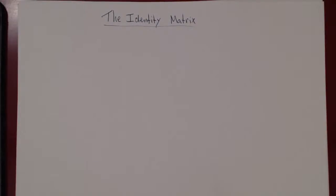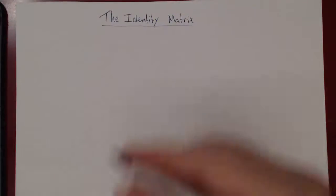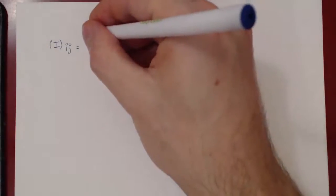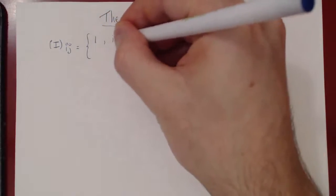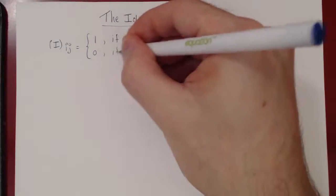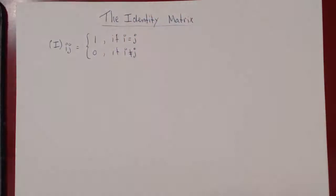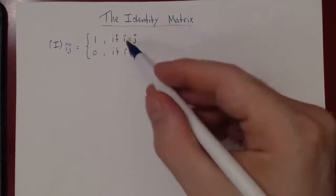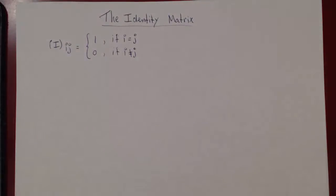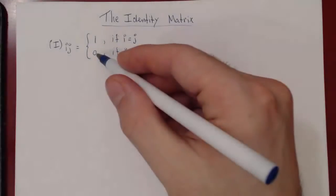Let us consider the identity matrix, which we denote by I. If we take the entry in the i-th row, j-th column, there are only two possible entries. The entry is 1 if the row index equals the column index, and 0 if the row index is different from the column index. Visually, when i equals j you are on the main diagonal; if i and j are different, you are off the main diagonal and all entries are 0.